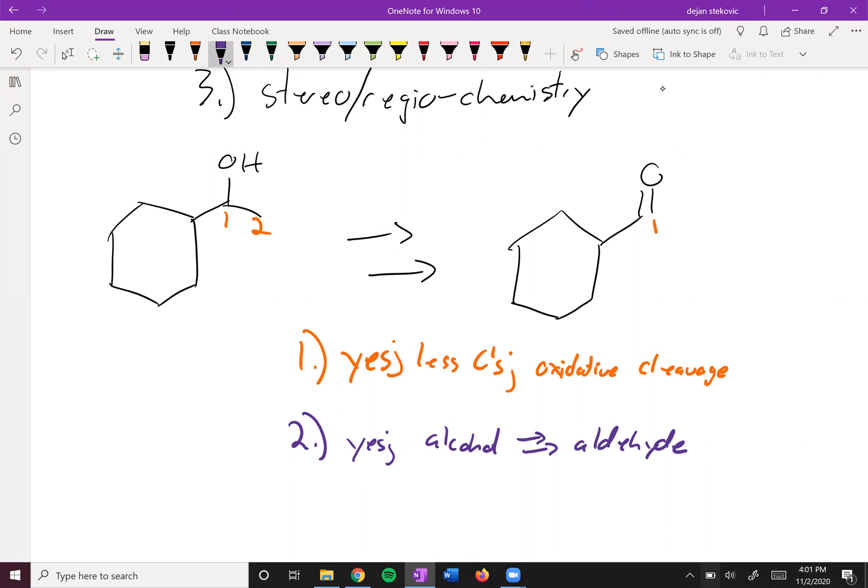We haven't learned a one-step way to do this, but to get to an aldehyde and have less carbons we had to have done some kind of oxidative cleavage, and so that means ozone with zinc. That's the only way we can make an aldehyde through oxidative cleavage.